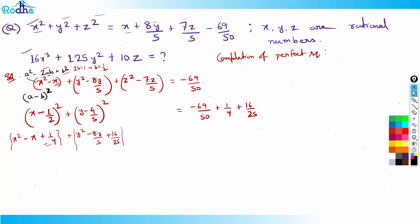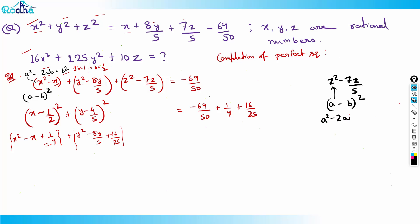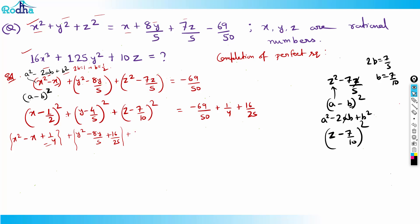For z² − 7z/5, again same form: a = z, and 2ab = 7z/5, so 2b = 7/5, meaning b = 7/10. So I write (z − 7/10)². Expanding gives z² − 7z/5 + 49/100. Since I've added 49/100 on the left, I also add 49/100 to the right side.